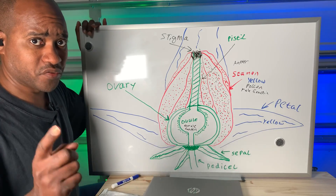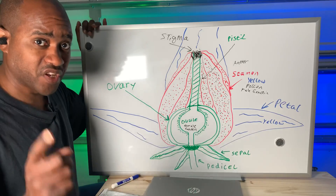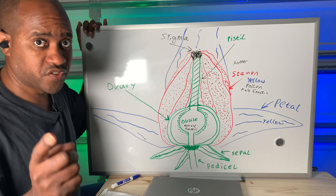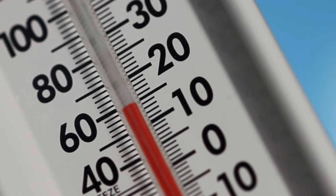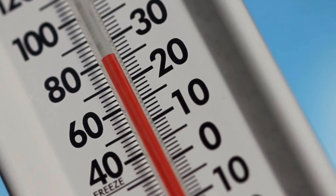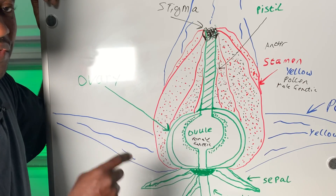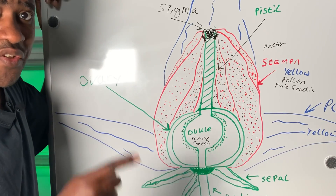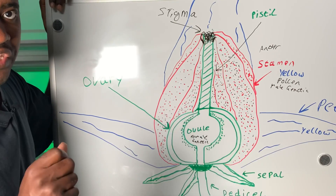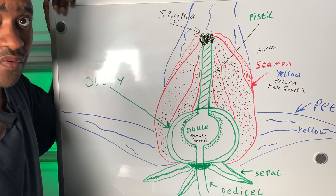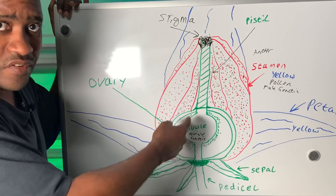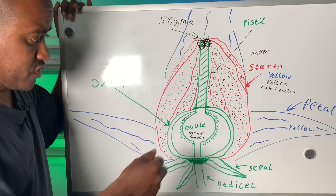The next thing you probably want to understand is why your tomatoes are not setting fruit — it could be a number of factors. One of those is temperature. The optimum temperature for tomatoes to set fruit is about 65 to 80 degrees during the daytime and 65 to 70 degrees at night. Tomato plants know when their pollen is good and when it's bad. If the temperature during the daytime goes above 90 degrees or so, the pollen itself will go bad and will not be able to pollinate the ovary and cause it to form a fruit.